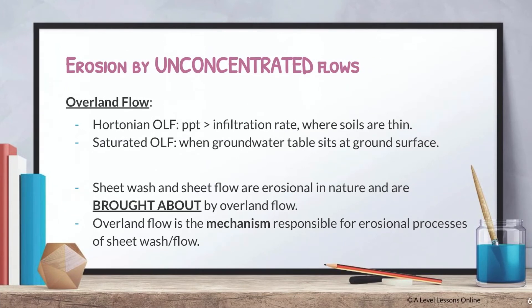Sheet wash and sheet flow are erosional in nature and are brought about by overland flow — they fall as a subset of it and can be used interchangeably. When looking at specific overland flows you refer to Hortonian and saturated overland flows, but generally these can also be called sheet wash. Think of overland flow as the river; sheet wash and sheet flow are the erosional processes occurring within it. Overland flow is the enabling mechanism.